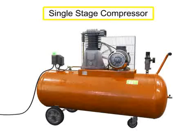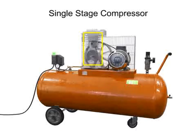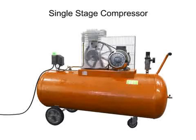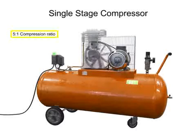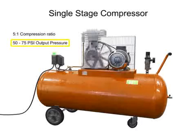This is a single-stage compressor. It has only one piston and cylinder and compresses the air in only one stage. A single-stage compressor typically has a compression ratio of 5 to 1 with an output pressure of about 50 to 75 PSI.